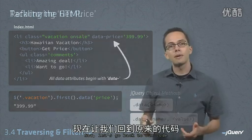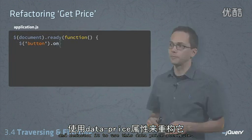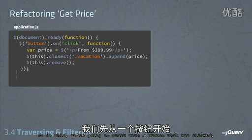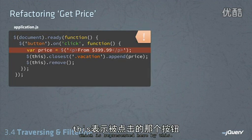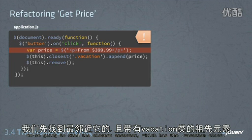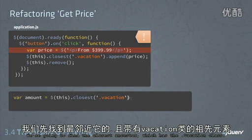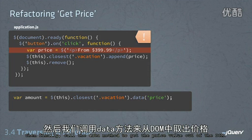Now let's go back to our old code and refactor it to use this data-price attribute. To do this, we're going to start with the button that was clicked, which is represented here by 'this', and we're going to find the closest ancestor which has the dot vacation class.